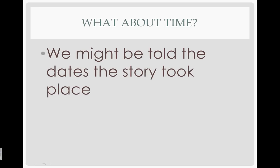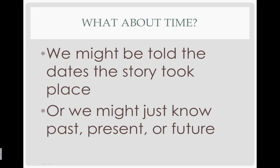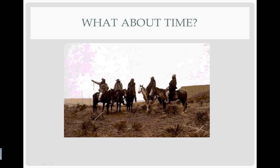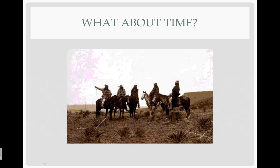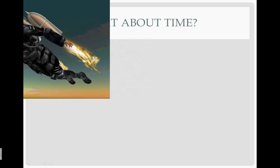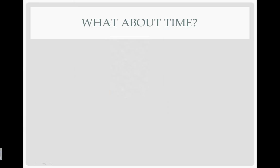So what about time? We might be told the dates the story took place, we might be told the years or the specific days that it took place, or we might just know that it took place in the past, the present, or the future. So maybe it took place in a time where people rode horses instead of driving cars — we would assume that took place in the past. Maybe it took place in a time when people are wearing jetpacks and flying all around — we would assume that that was probably the future.